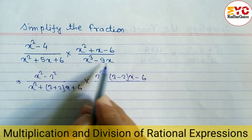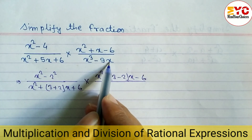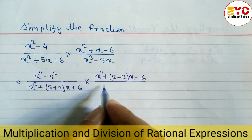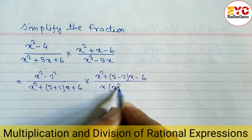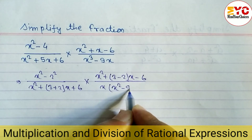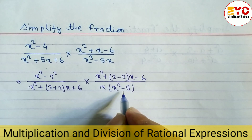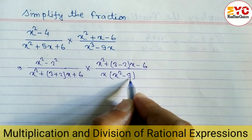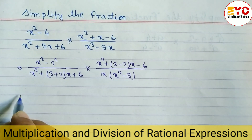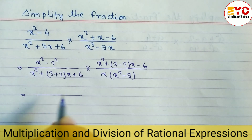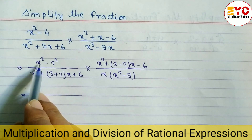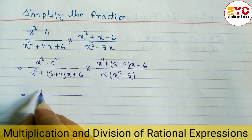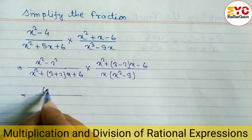Here you can see there is an x cubed term and also an x term, so we can take x as common and the remaining is x squared minus 9. In the next step we can convert this in the form of a squared minus b squared, because the square root of 9 is 3. This is in the form of a squared minus b squared and the formula is (a plus b)(a minus b).